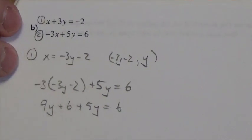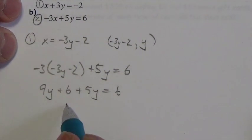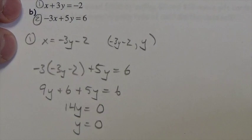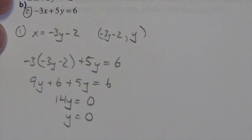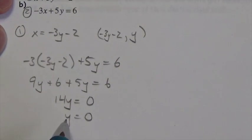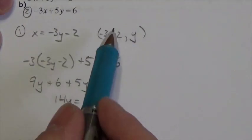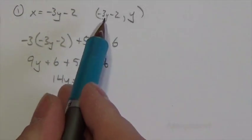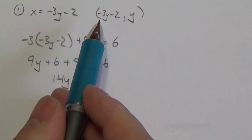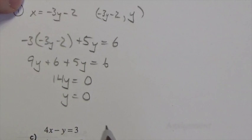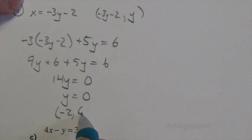Distributing through: positive 9y plus 6 plus 5y equals 6. Notice something interesting — 14y is equal to 0, so y is equal to zero. Nothing wrong with zero as an answer. Plugging back into equation one: negative 3 times 0 is 0, minus 2 is negative 2. So the point is (-2, 0).